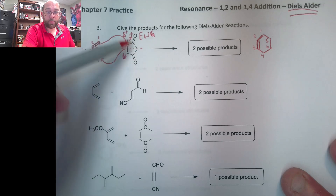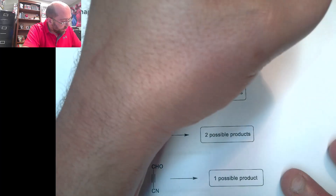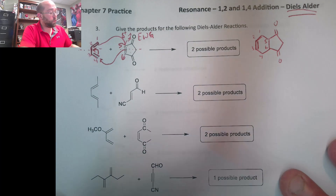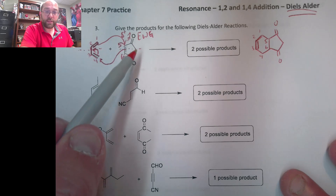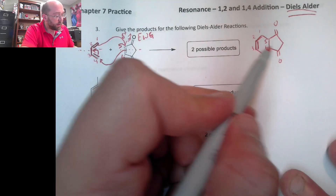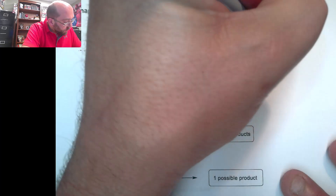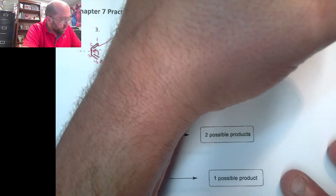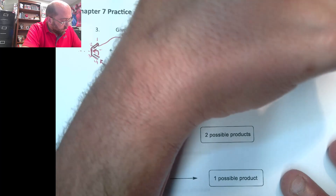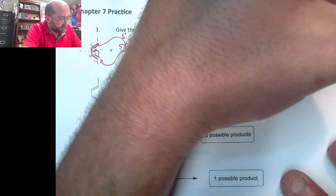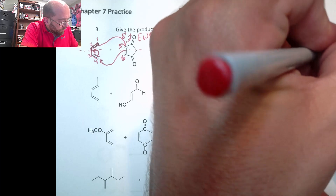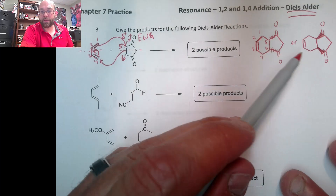We need to put the other stuff coming off of carbons five and six. It says there are two possible products, and a lot of this happens because — remember — we talked about retaining stereochemistry. Around this double bond it looks cis, so we have to show the cis nature of it coming off this ring at carbons five and six. You could have two dashes there, or you could have two wedges. So those are the two possible products — it's based off of stereochemistry.